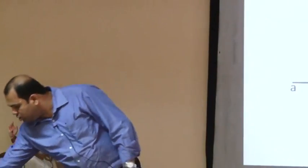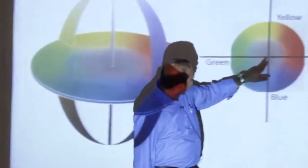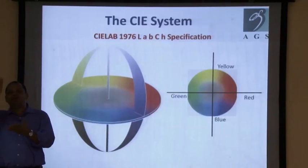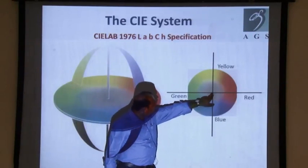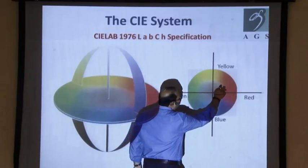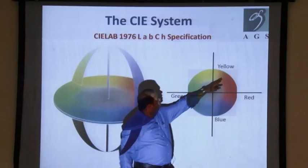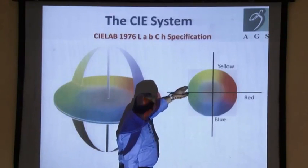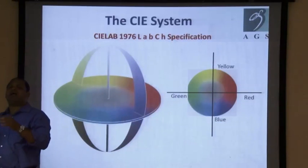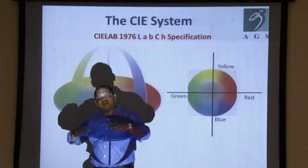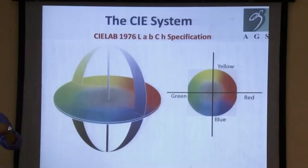Now if I go to this graph over here — this point, the intersection point — the color at the tip, whether it is this tip or anywhere, that's the brightest color that can be reproduced. And as you go further, the color is dull, dull, and then it will lose its color and what remains is only black and white. Now how is C calculated?